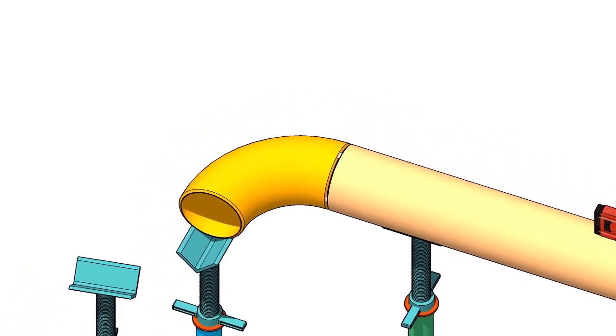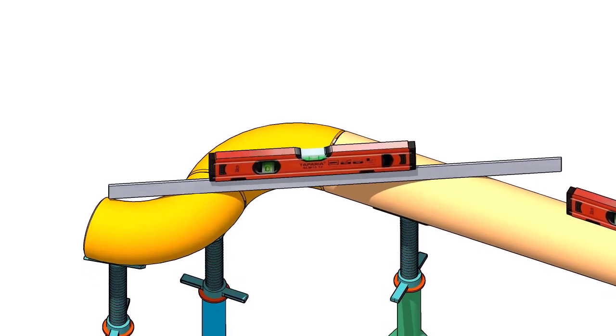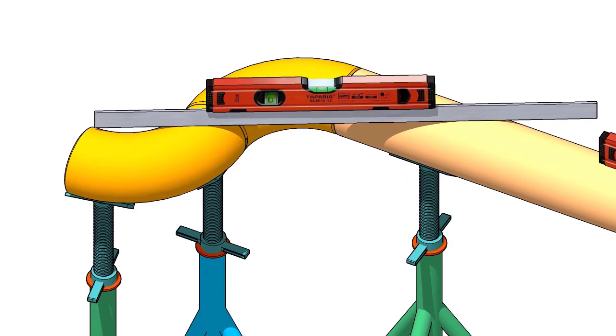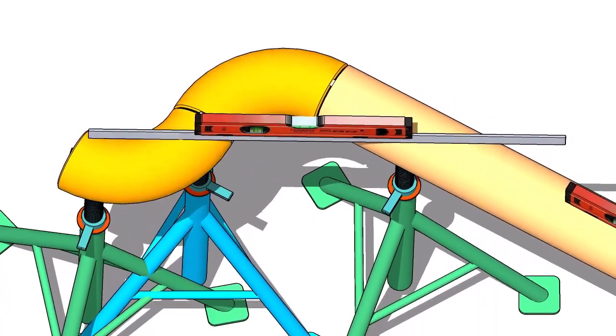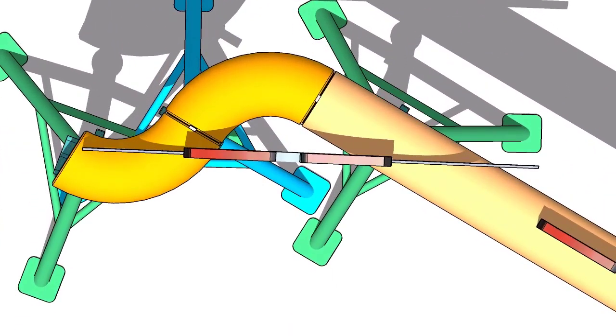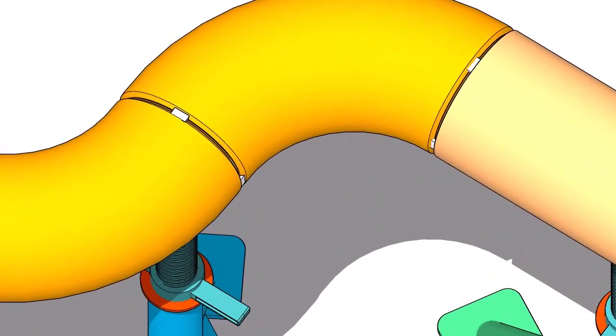Put the elbow on the stand and check the level. Use a straight edge and a spirit level. Check the face level of the elbow, tack weld on the top and the bottom.